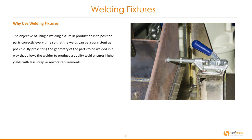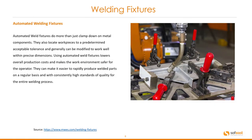Let's switch over to welding fixtures. The objective of using a welding fixture in production is to position parts correctly every time so the welds can be as consistent as possible. By presenting the geometry of the parts to be welded in a way that allows the welder to produce a quality weld, it ensures higher yields with less scrap or rework. Automated welding fixtures do more than just clamp down on metal components — they also locate work pieces to a predetermined acceptable tolerance and can be modified to work with precise dimensions. Using automated welding fixtures lowers overall production costs, makes the work environment safer, and allows consistently high standards of quality for the entire welding process.